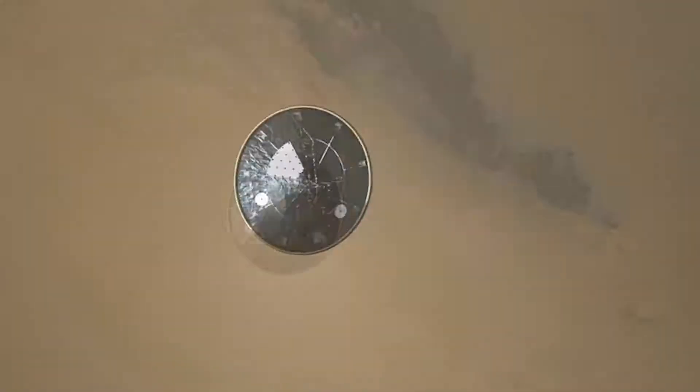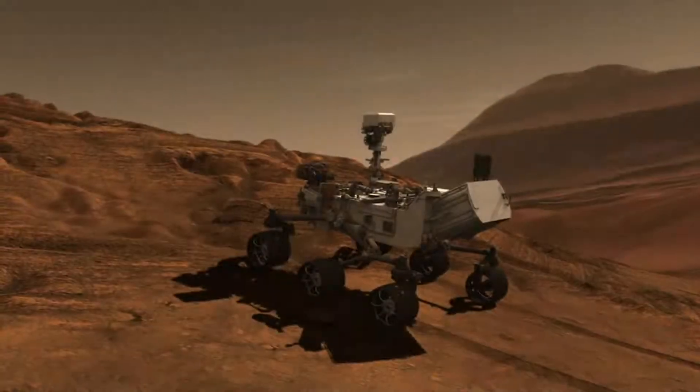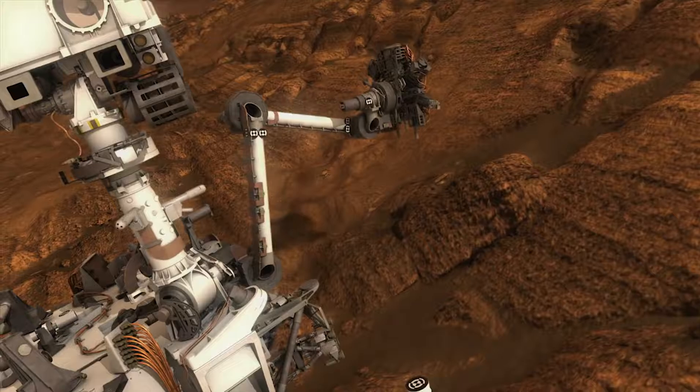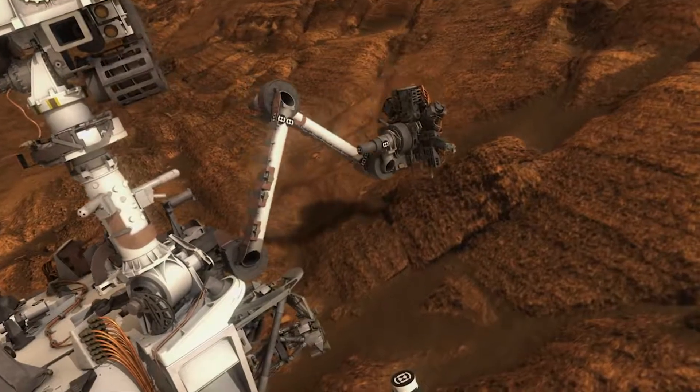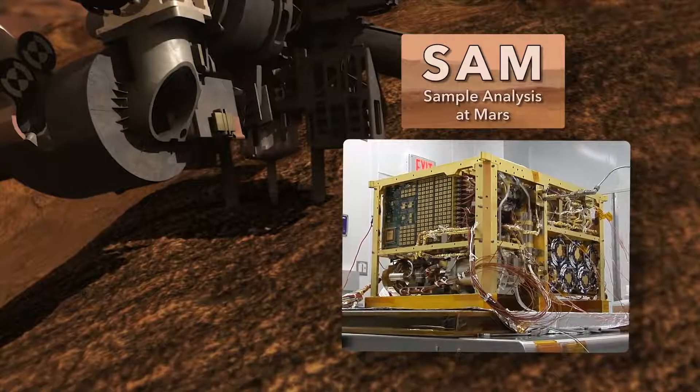We are decelerating. Six years ago, Curiosity landed in Gale Crater on an ancient lake bed. A few months after arrival, it drilled into sedimentary rocks and detected traces of organic molecules using an instrument called SAM.